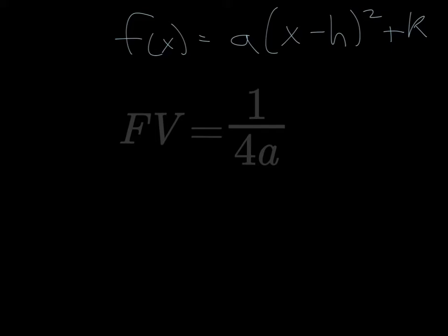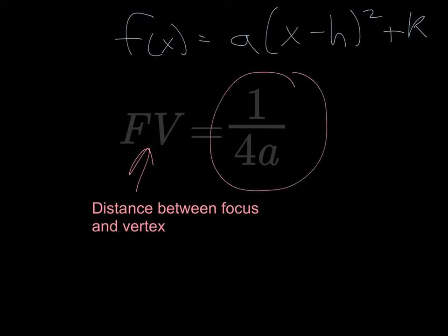When we are given an equation in the form of f(x) equals a(x minus h) squared plus k, which is vertex form, the magical shortcut that we have is FV. This stands for the distance between the focus and the vertex, and that is equal to 1 over 4a, and that a is the same a that is located right there in the beginning of the equation.